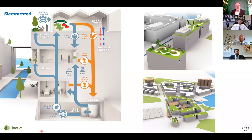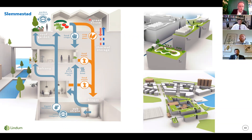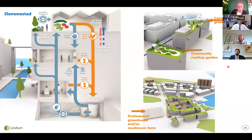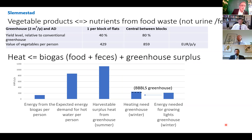I was also asked about heat. Here is an example from an urban sustainability project I was involved in in Slemmestad, where we tried to find a complete integrated system for the area — with anaerobic digestion in the basement, greenhouses on the roofs, using food waste and returning the nutrients for outdoor and indoor growing. That involves community greenhouses, community rooftop gardens, and professional greenhouses or mushroom farms as more central facilities. I've made some calculations of what we can grow and how much heat we can get from organic resources.